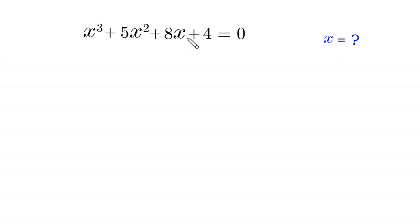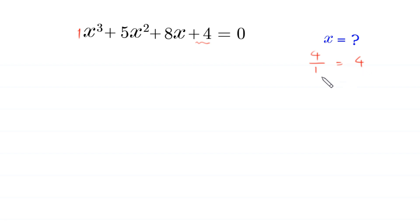In this expression, we have constant plus 4. The leading coefficient of x cubed is 1. If we divide 4 by 1, we get 4. All possible factors of this 4 are plus or minus 1, plus or minus 2, and plus or minus 4. Now we use synthetic division to find at least one solution.